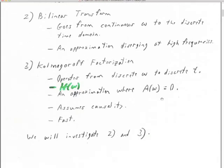The third strategy is called Kolmogorov factorization. It's very nice because it operates from discrete omega — we can have a frequency series that is our desired amplitude spectrum, and it goes directly to discrete time. It involves the Hilbert transform, and where the amplitude spectrum goes to zero anywhere, it has to be an approximation. So if we completely want to get rid of, say, 60 Hz power line noise, we can't do it — we can take it down to 1% of what it was, but we can't completely get rid of it, because nowhere can we have zero response. It basically implements causality, and it's also fast.